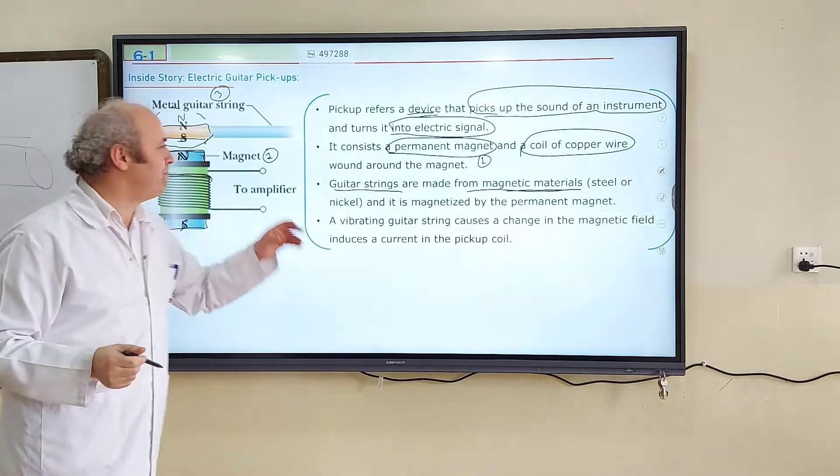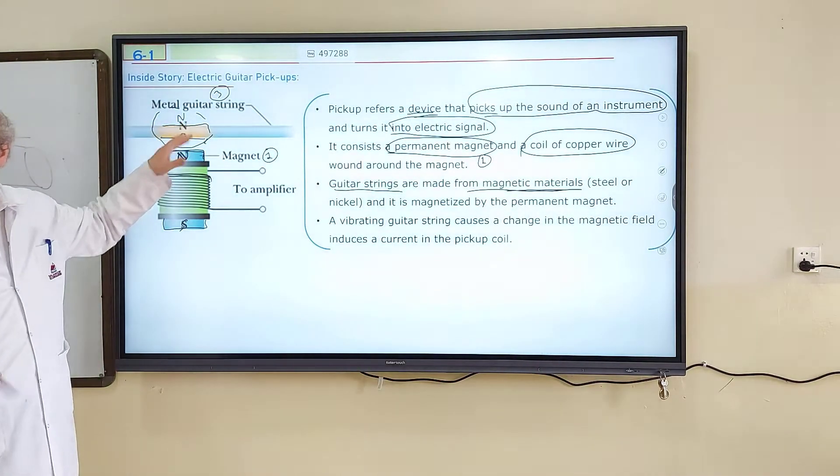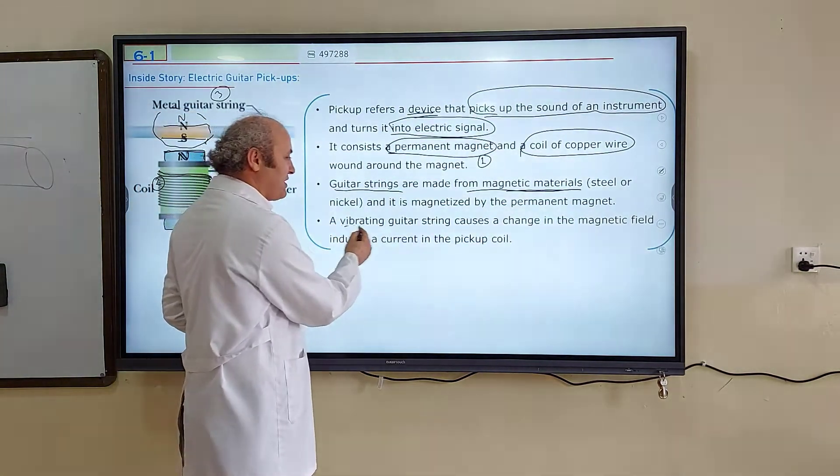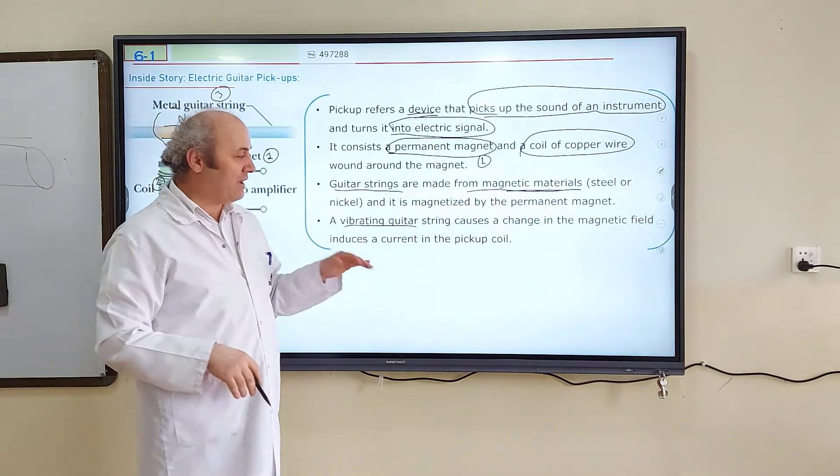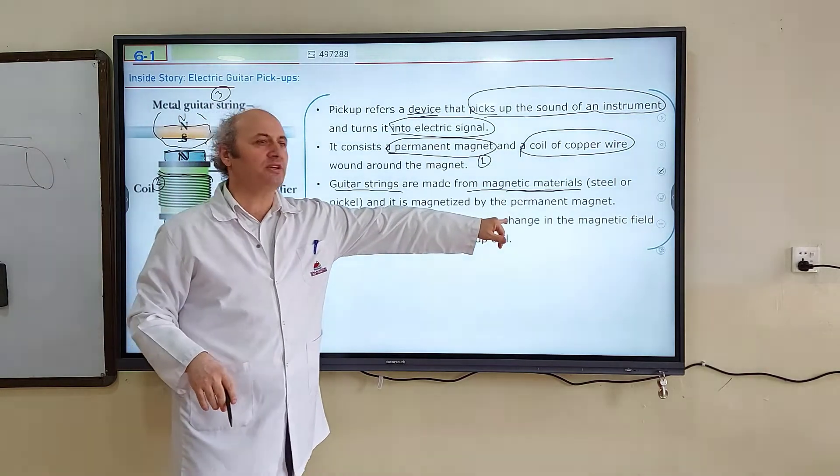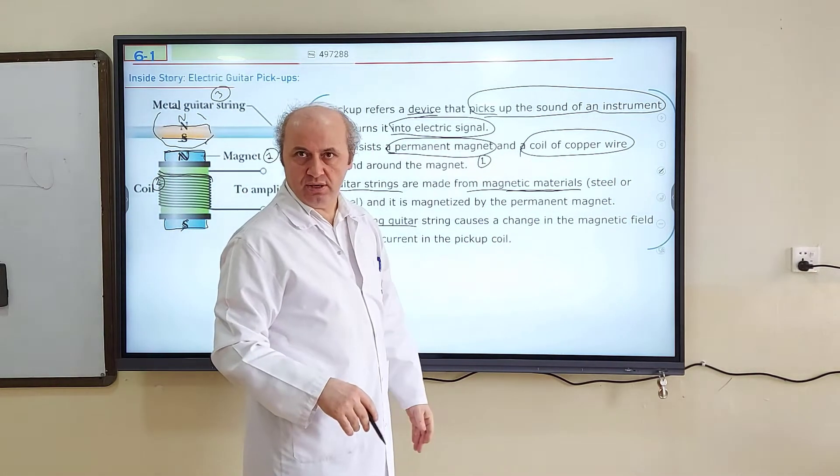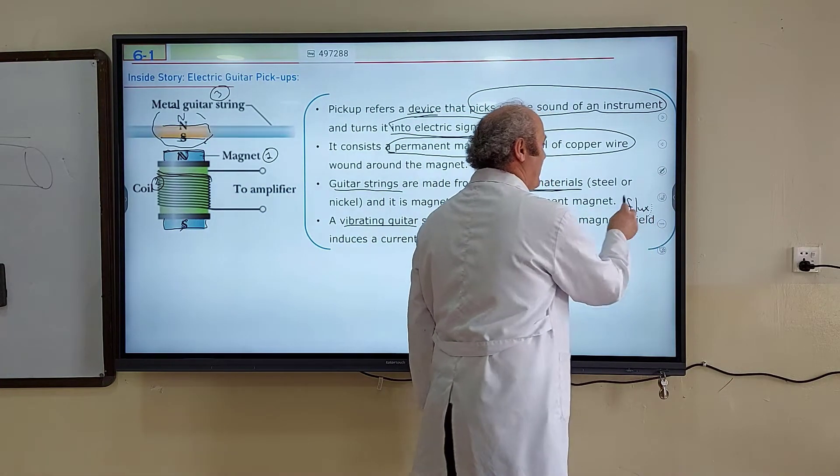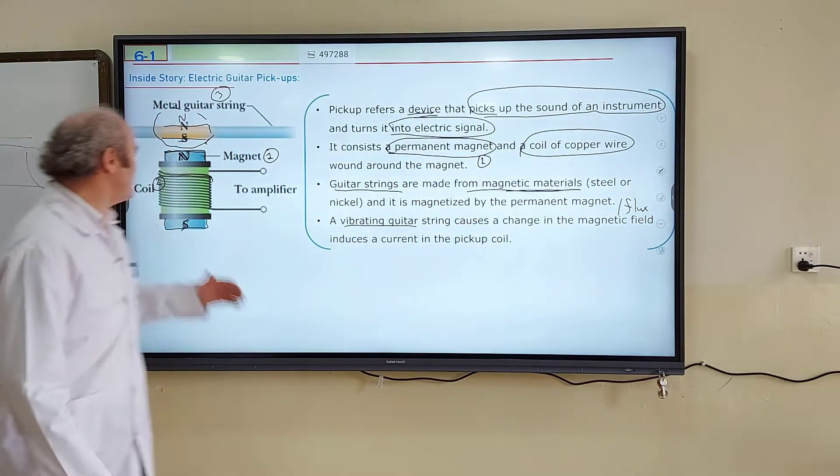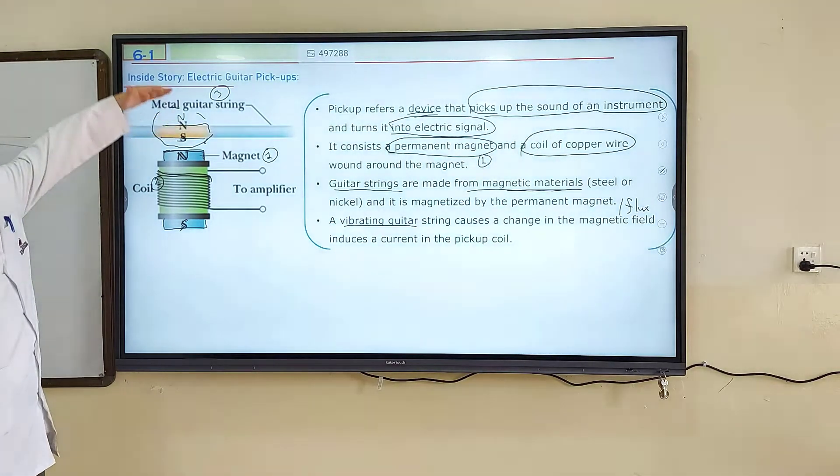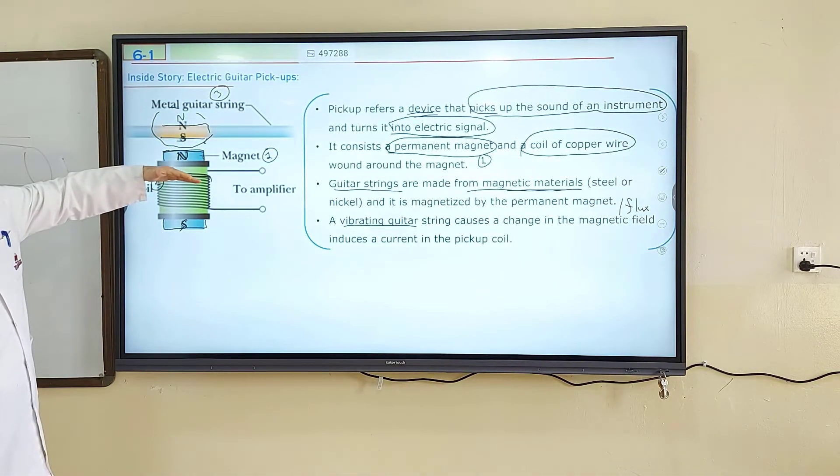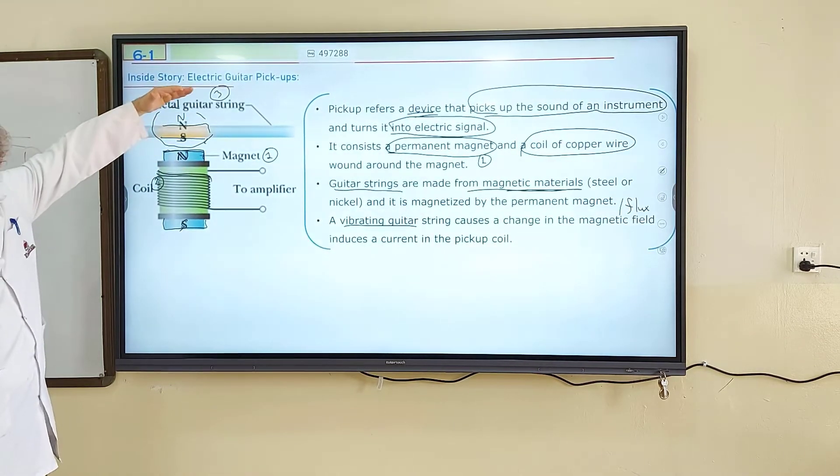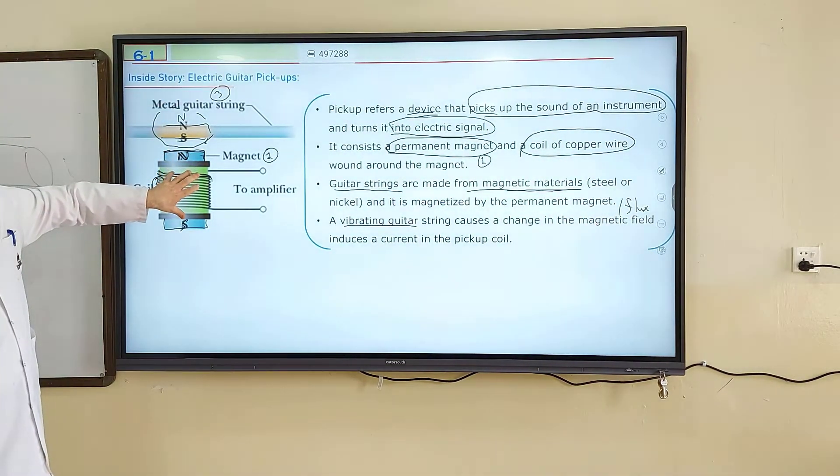After that you are going to pluck the string for playing the guitar. And then pluck the string, guitar string starts vibrating. Vibrating guitar string causes a change in magnetic fields and magnetic flux. It causes a change in magnetic field and causes a change in magnetic flux. Which magnetic flux? Look at it here. So when the string is vibrating, sometimes it gets closer, gets farther, closer, farther, closer, farther, closer, farther. So magnetic flux through the coil will change.